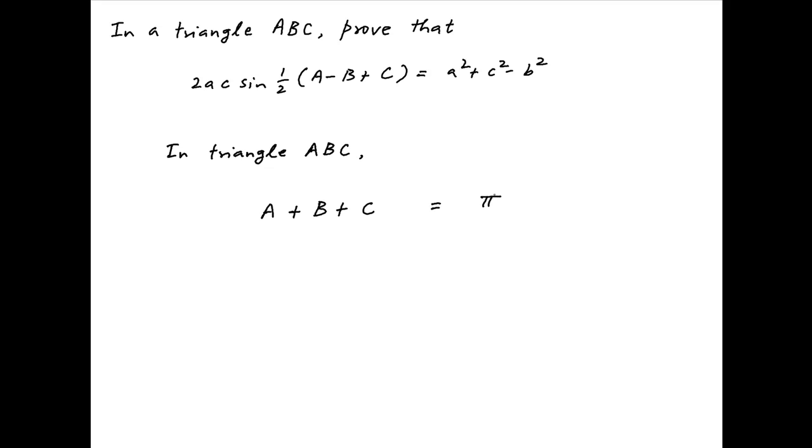Now, divide both sides by 2 and subtract the angle B from both the left-hand side and the right-hand side. Therefore, the left-hand side is equal to A plus C minus B upon 2 and the right-hand side is pi upon 2 minus B.